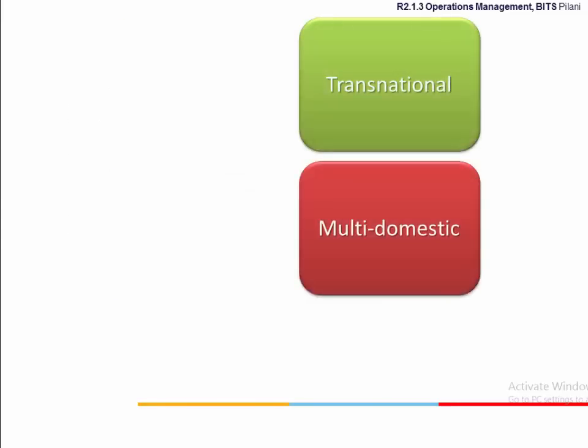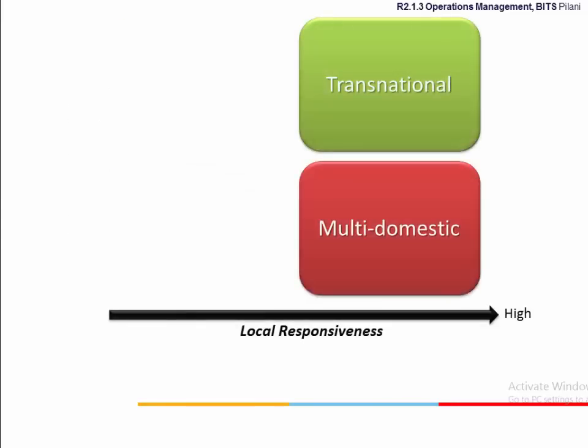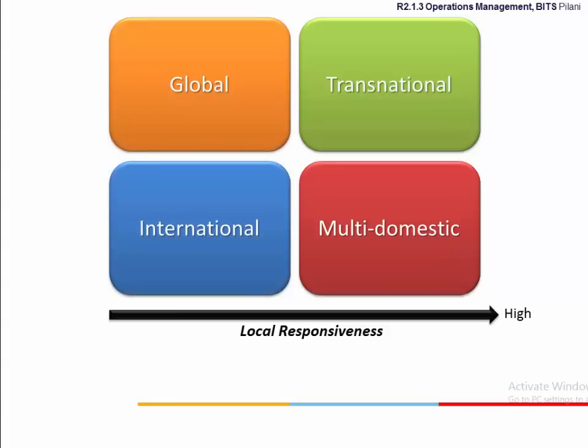Out of these four, multi-domestic and transnational strategies have a high level of local responsiveness. Organizations adopting either of these two strategies will be able to offer products and services that meet regional preferences. On the other hand, global and international strategic organizations will have limitations on this front, tending to have standard products notwithstanding regional preferences.